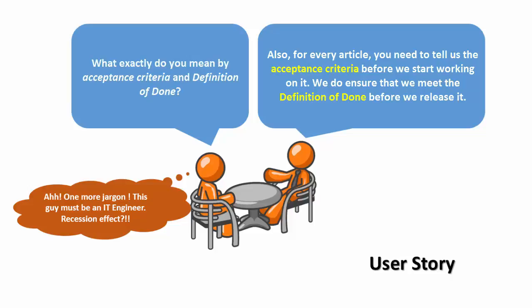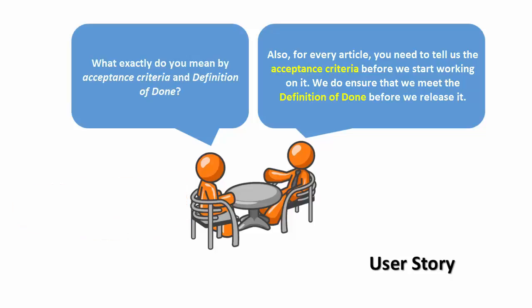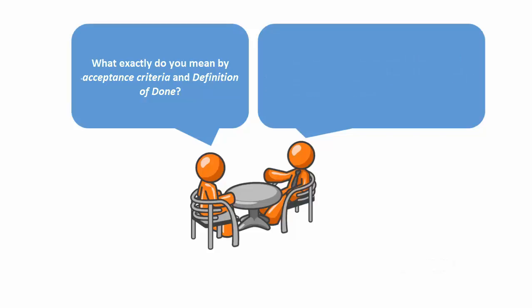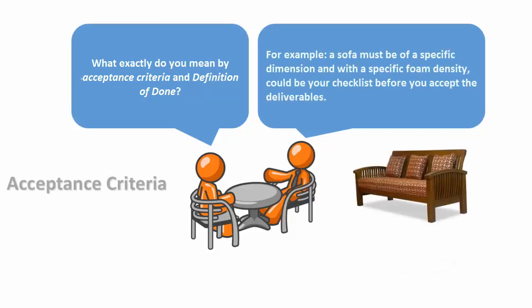What exactly do you mean by acceptance criteria and definition of done? Every requirement may have its individual acceptance criteria to be met in order to be considered complete. For example, a sofa must be of specific dimension and with a specific foam density. This could be your checklist before you accept the deliverable.